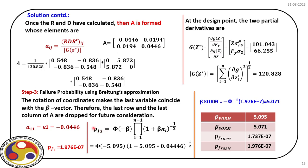PF2 denotes probability of failure from second order reliability analysis. The table summarizes the impact of curvature: using FORM, beta is 5.059. Incorporating curvature via SORM shows the correction over the FORM estimate, also reflected in the probability of failure estimation. This demonstrates step-by-step how Breitung's model incorporates the effect of curvature.